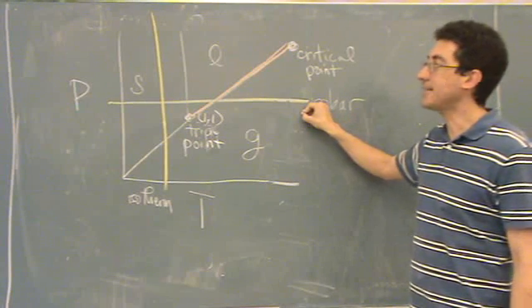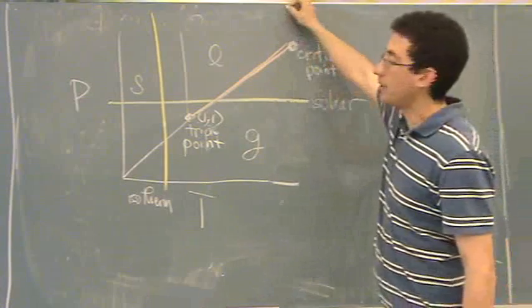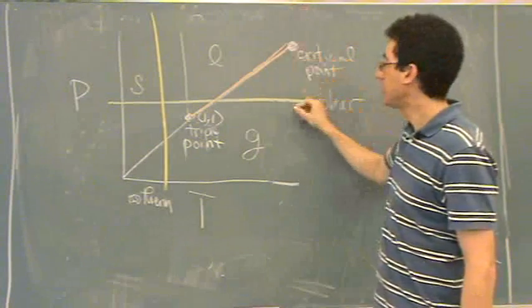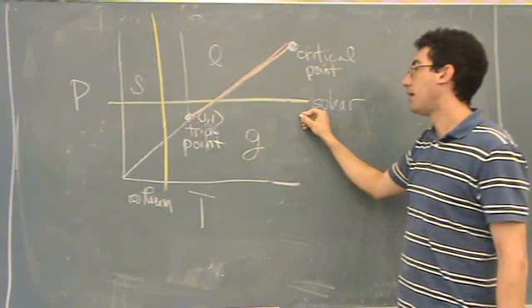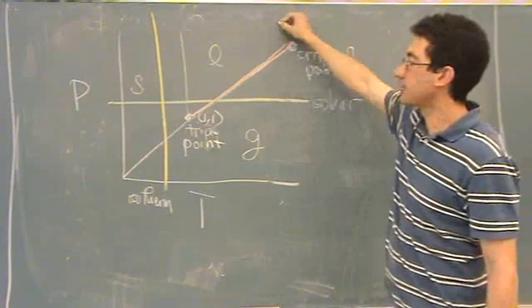If you heat up according to an isotherm, you'll go up into the liquid phase. If you increase the pressure according to the isotherm.